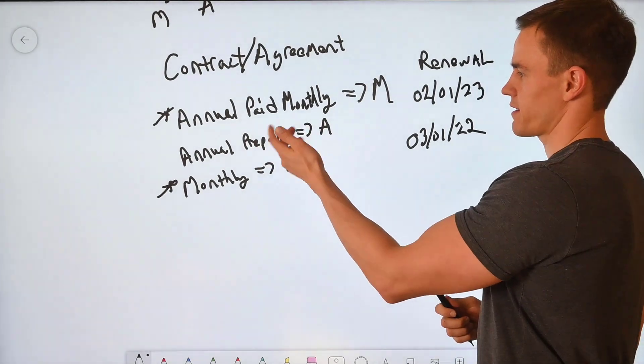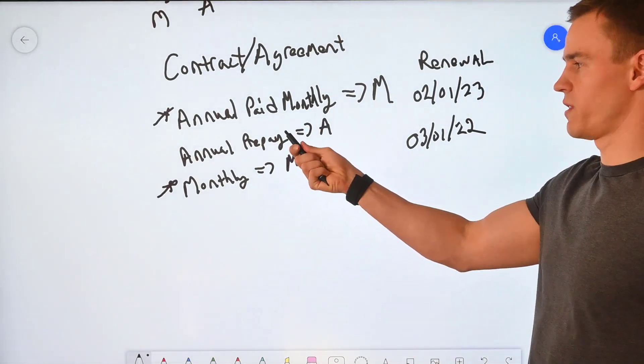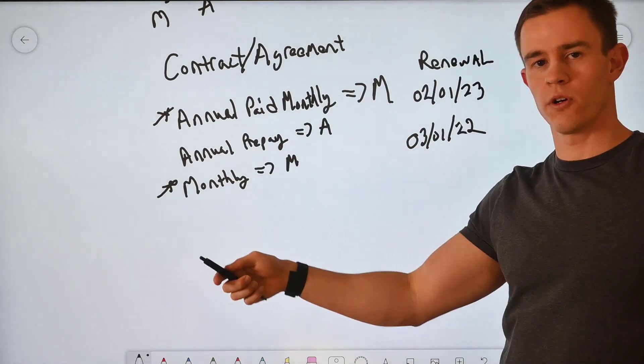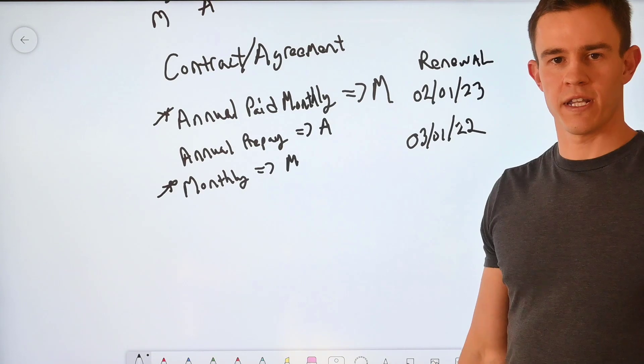I can simply set a cancellation date on my agreement or contract within the PSA tool. I can assign that to a contact as well to automate some of the renewal notifications when it's up 30 days for renewal.